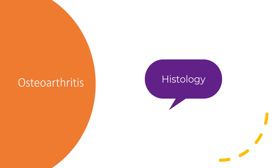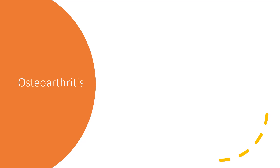I'm going to talk to you about the pathology of osteoarthritis. There is no pathogenesis, no etiology here, just plain and simple — what do you see under the microscope when someone's sections are from an osteoarthritic knee or hip most commonly, but occasionally other joints as well?